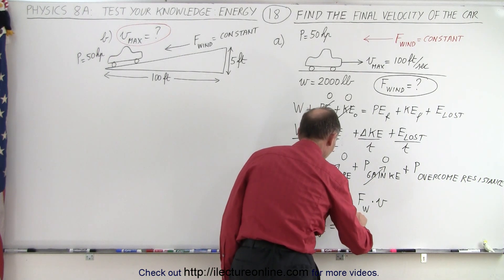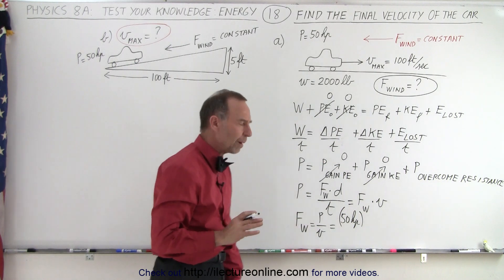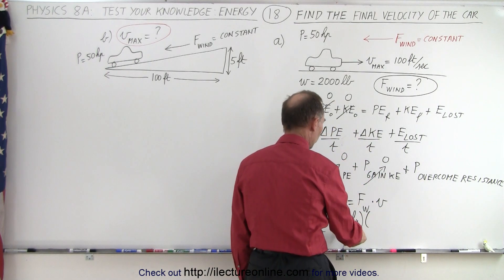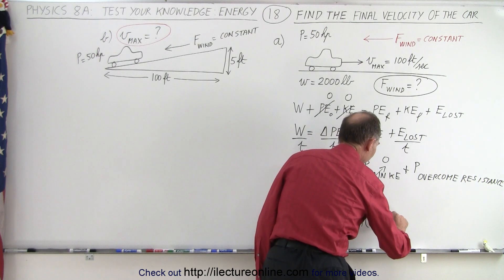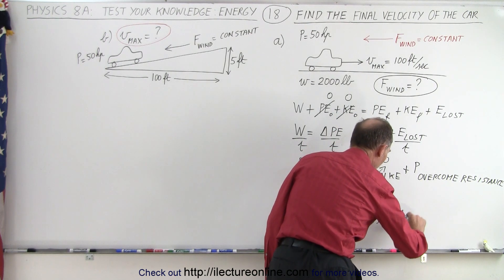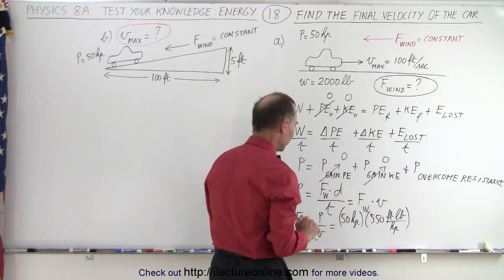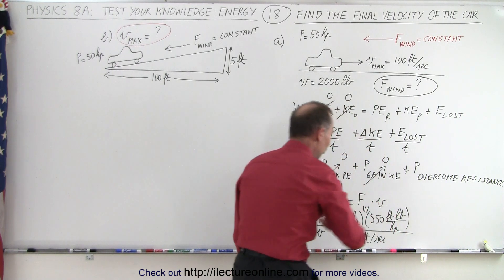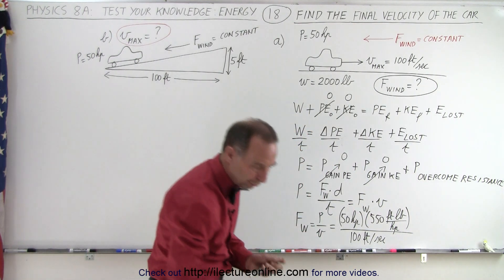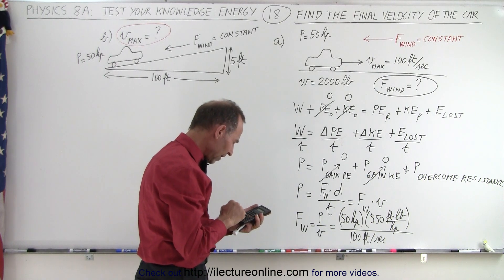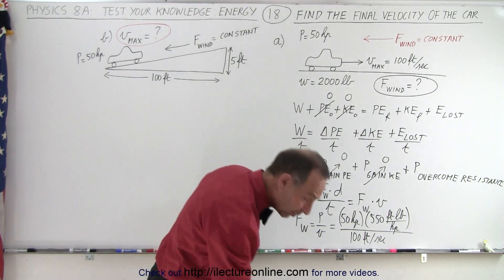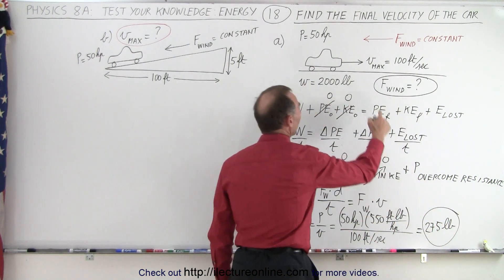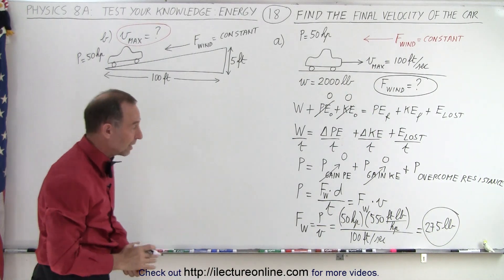The power from the engine is 50 horsepower. We convert that to the British imperial system: 1 horsepower equals 550 foot-pounds per second. The velocity is 100 feet per second. So the force of the wind equals 50 times 550 divided by 100, which equals 275 pounds of force — that is the constant force of the wind pushing against the car.